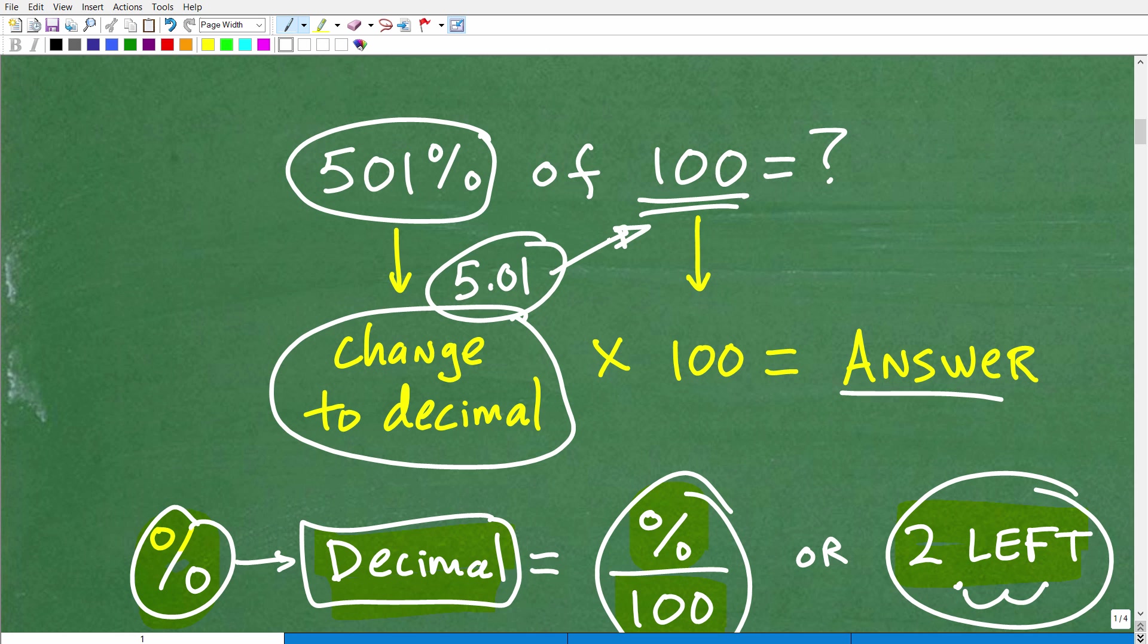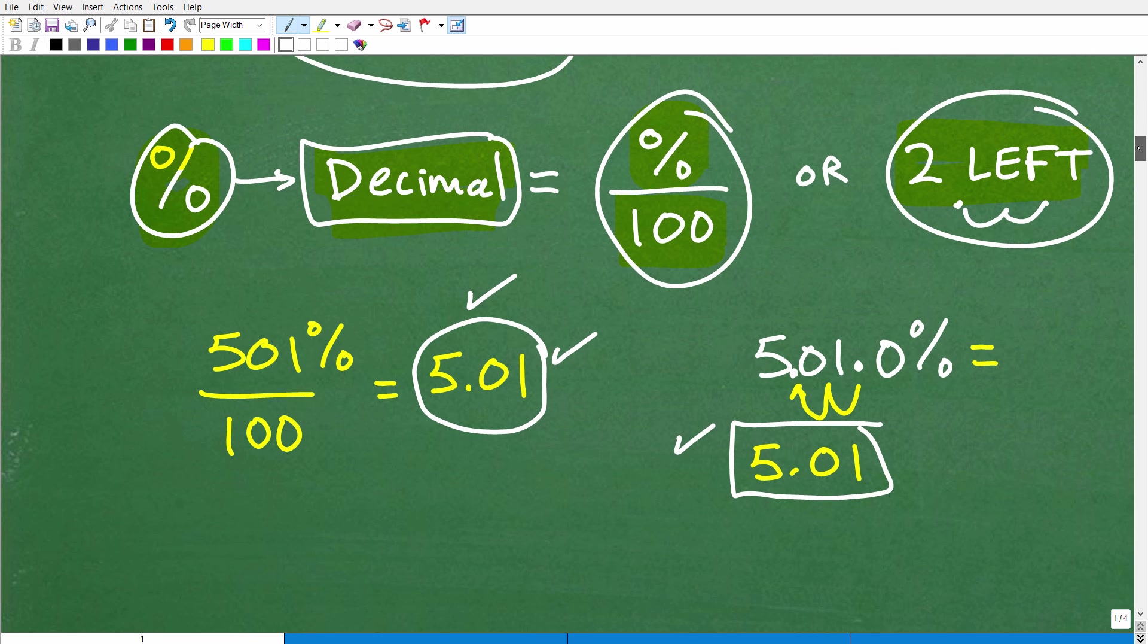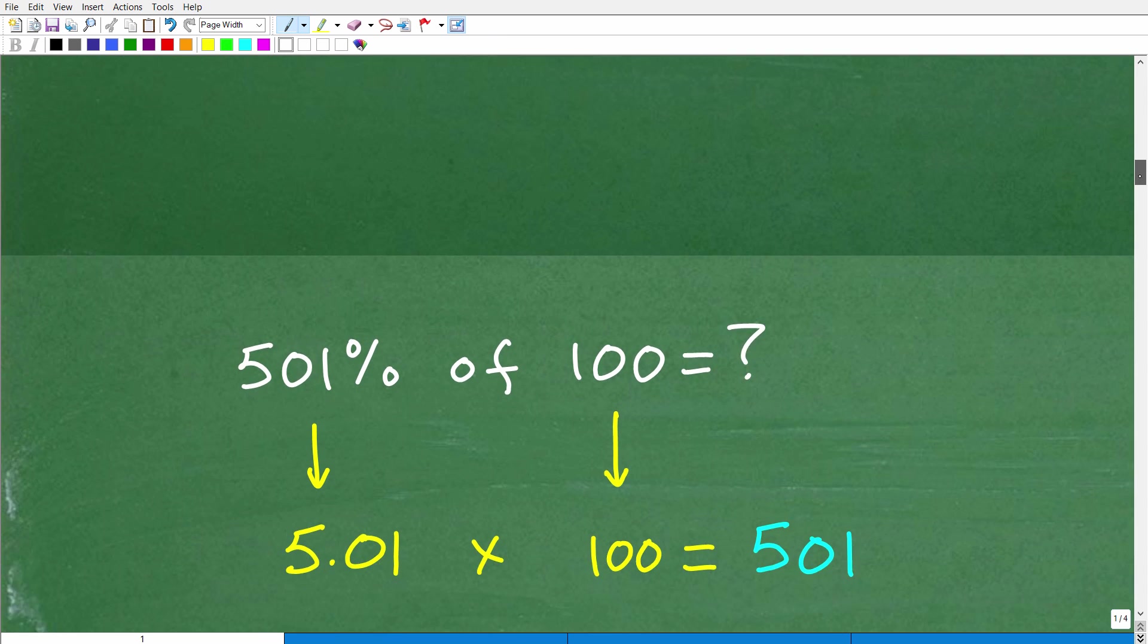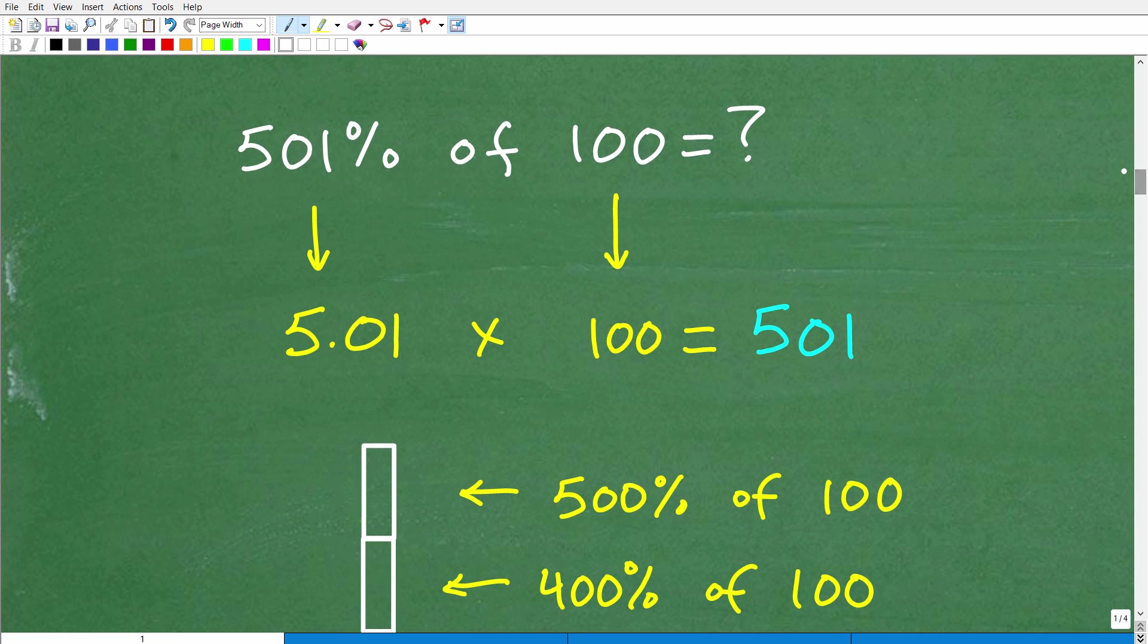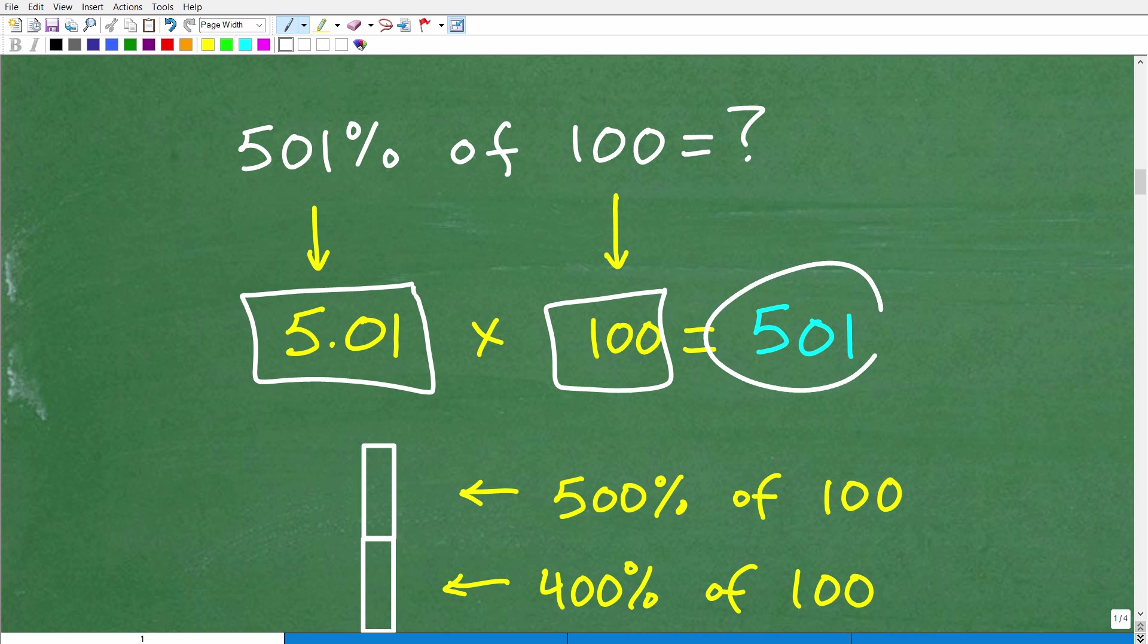That's what we have to do first. We change our percent to a decimal, which is 5.01, and then we're just simply going to multiply that by 100. So 501% changed into a decimal, converted to a decimal, we're going from a percent to a decimal, 5.01, and we're going to multiply by 100. We're actually going to undo what we just did—we divided by 100, now we're multiplying by 100. We're going to end back up with 501.